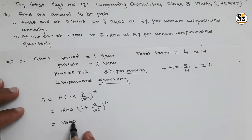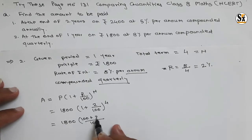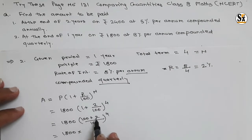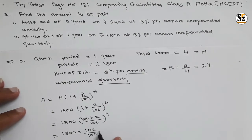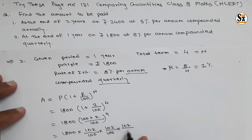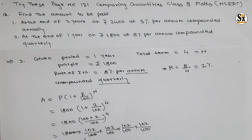Calculate this: 1800 × (100 + 2)/100 raised to 4. So: 1800 × (102/100)^4. This expands as 1800 × (102/100) × (102/100) × (102/100) × (102/100). The two zeros cancel with 1800, leaving 18 × 10, and the four factors of 102 remain.